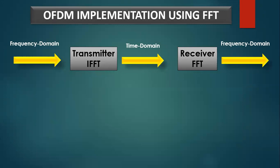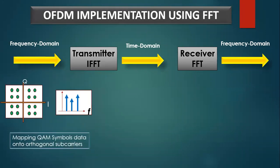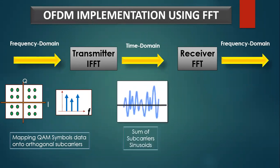Coming to the implementation of OFDM using FFT: OFDM implementation can be done in the digital domain using a combination of Fast Fourier Transform and Inverse Fast Fourier Transform. In a digitally implemented OFDM system, the input bits are grouped and mapped to source data symbols that are complex numbers representing the constellation points. These complex source symbols are created by the transmitter as though they are in the frequency domain and are inputs to an IFFT block that transforms the data into the time domain. The resulting time domain signals from the IFFT are transmitted across the radio channel.